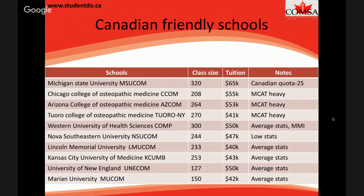You can see some of those schools listed with their tuition and whether they have lower or higher average stats. Nova Southeastern is listed as lower stats, though they may be somewhat stricter with Canadian applicants. Note that Touro, AZCOM, and CECOM are quite MCAT-heavy — AZCOM and CECOM likely won't interview you in early stages without an MCAT of around 30 or above. Touro is trending toward a class average of around 31, which is close to many US MD schools.